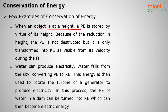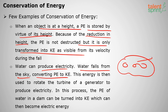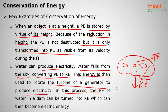Examples of conservation of energy: an object at height stores potential energy; as it falls, that potential energy decreases and converts into kinetic energy. Water stored in clouds has potential energy; when it falls, it converts to kinetic energy, which rotates the turbine of a generator to produce electricity — as seen in hydroelectric power stations near dams and reservoirs.